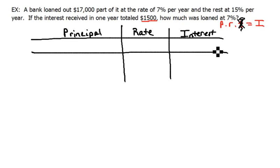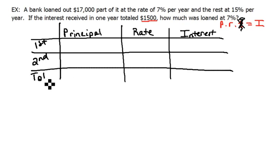Now we've got two different accounts that we're putting this in, right? So we've got a first account and a second account, and then I'm going to go ahead and have a total row also, because they told us that we have a total principal of $17,000. So if we have a total principal of $17,000 and we're going to put part of it in this first account and part in the second one, we don't know exactly how much is going into each one. So we're going to have to call the first one X and the second one 17,000 minus X.